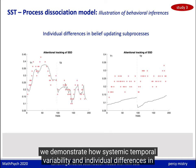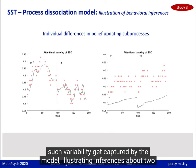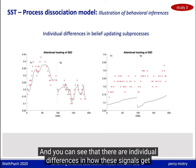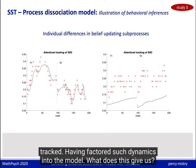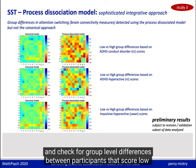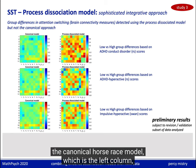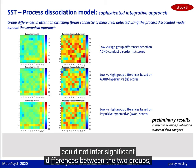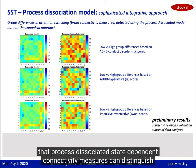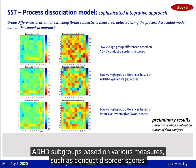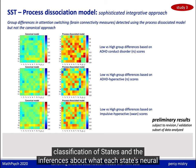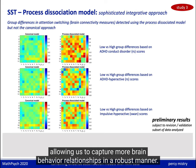First, we demonstrate how systemic temporal variability and individual differences in such variability are captured by the model, illustrating inferences about two participants. The dots show the actual stop signal delays, while the gray lines show the inferred tracking by individuals, and you can see individual differences in how these signals are tracked. Having factored such dynamics into the model, we compared state-dependent inferred ROI connectivity and checked for group-level differences between participants scoring low versus high on various ADHD-related test measures. In each case, the canonical horse race model could not infer significant differences between the two groups, but the process-dissociated model inferred stronger differences, showing that process-dissociated state-dependent connectivity measures can distinguish ADHD subgroups based on conduct disorder scores or impulsivity-hyperactivity scores. Capturing systematic temporal variability changes the classification of states and the inferences about each state's neural representation, allowing us to capture more brain-behavior relationships in a robust manner.